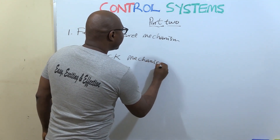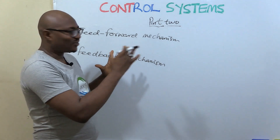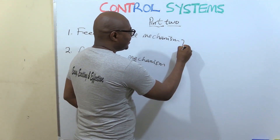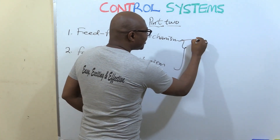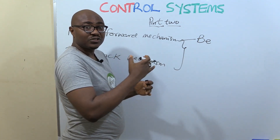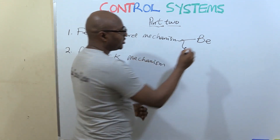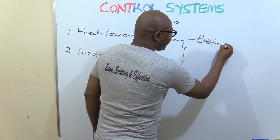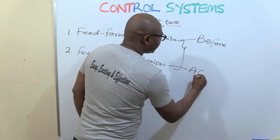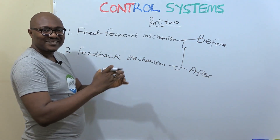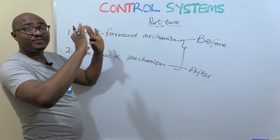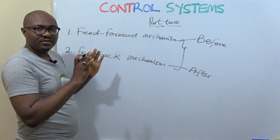Based on the relationship between stimulus and response, the timing is different. In feed forward, the response occurs before the stimulus effects a change. In feedback, the response occurs after the stimulus has already effected a change in the physiological variable being dealt with.